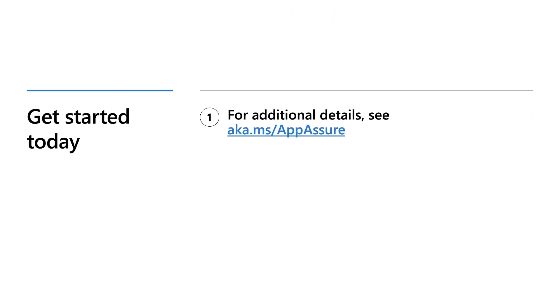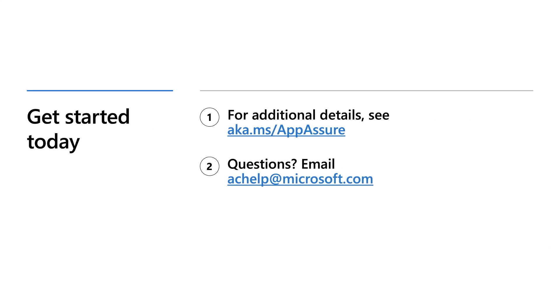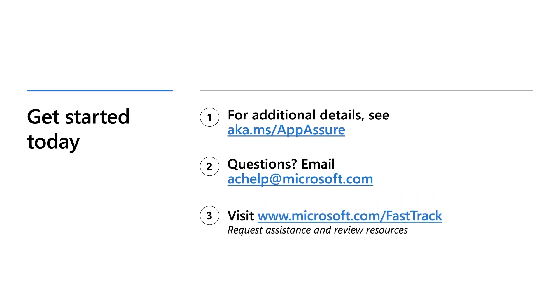To work with App Assure, submit your request for assistance through the App Assure portal and our router will assign your case to a dedicated App Assure manager to help resolve your issue. For more information, visit aka.ms/AppAssure. Have questions? Send us an email at achelp@microsoft.com. To learn more about all the FastTrack services available to you, please visit www.microsoft.com/FastTrack. Thank you for taking the time to watch our video. Our team looks forward to engaging with you on your deployment project and helping you solve your AppCompat issues should any arise.